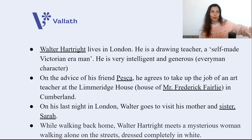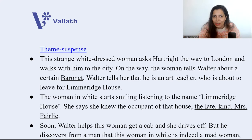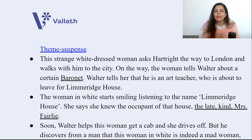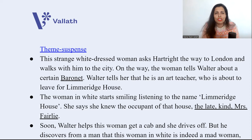Walter Hartwright meets this very strange and mysterious woman who is dressed from head to bottom in white. The theme here is suspense. This strange white-dressed woman asks Hartwright the way to London and walks with him to the city. While on the way, the woman tells Walter about a certain baronet, again and again saying: 'Baronet — I know his secret.'